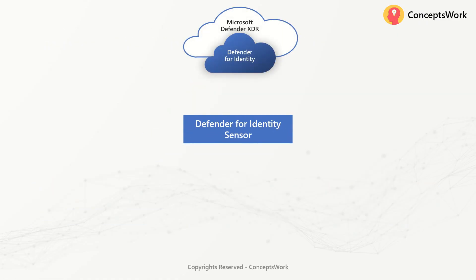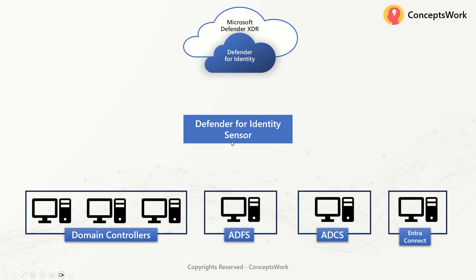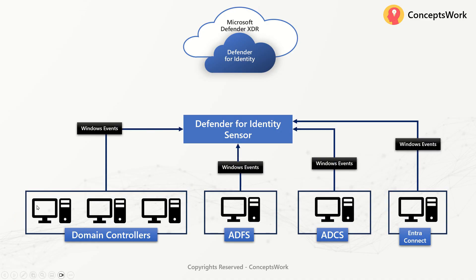Now let's talk about the first component: the Defender for Identity Sensor. Going by the naming convention itself, it's clearly evident that this is some application or agent which gets installed on a machine. Fundamentally, the Defender for Identity Sensor can be installed on Domain Controllers, ADFS servers, ADCS servers, and Entra Connect servers.